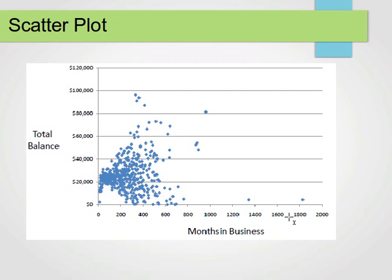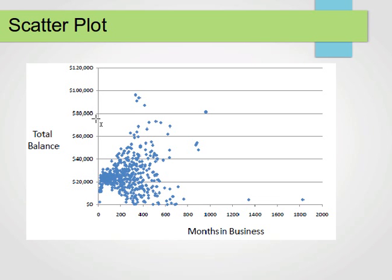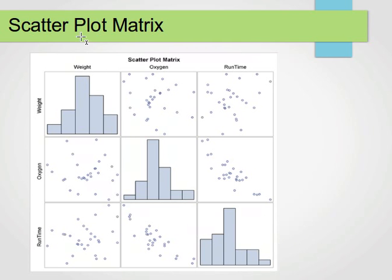Here is an example of a scatter plot. On the x-axis we have months in business, and on the y-axis is the total balance — this is probably about some companies. Each blue dot represents a company; for example, this one has been in business for over 200 months with a balance of around 1,000 dollars. The number of months looks quite large here — up to 1,800 months — but this is just an example to show how scatter plots work. This company, for instance, has been in business for 400 months with a balance above 80,000 dollars.